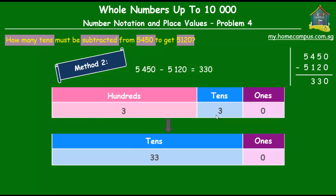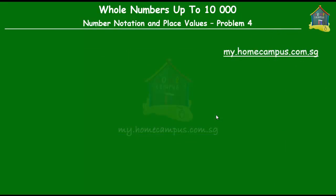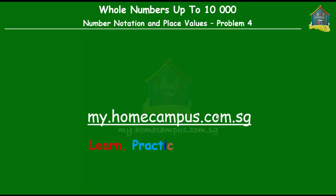So, there you go again. Both the methods give the same answer. There are 33 tens that must be subtracted from 5450 to get 5120. Alright. That brings us to the end of this lesson. For practice questions and worksheets, log on to my.homecampus.com.sg. This is Em signing off for now. Bye-bye.